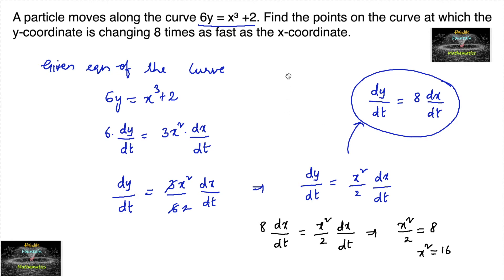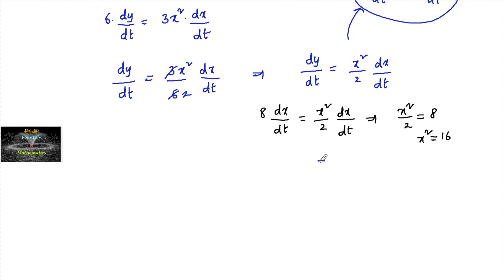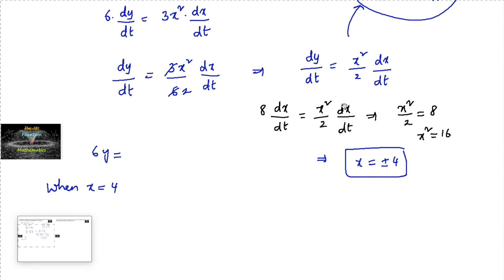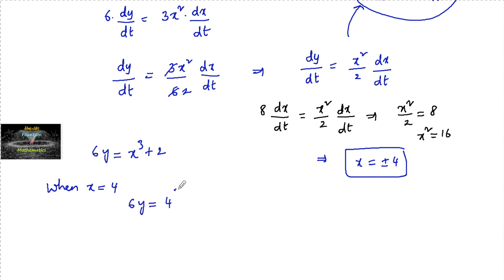So x = ±4, since x² = 16. When x = 4, the equation of the curve gives 6y = 4³ + 2 = 64 + 2 = 66. Therefore y = 66/6 = 11.